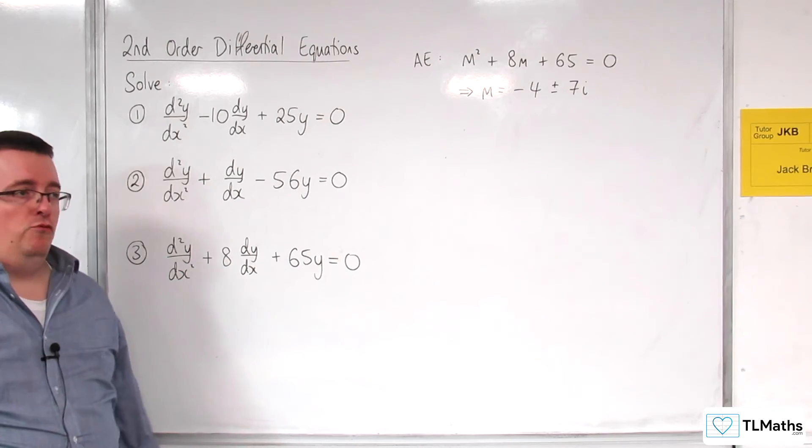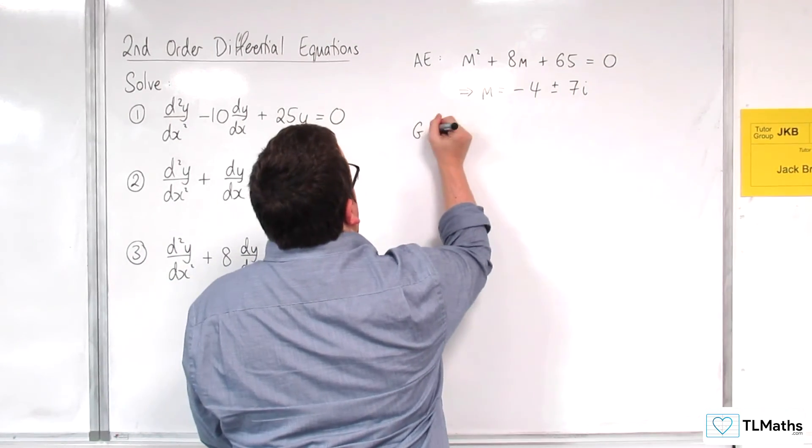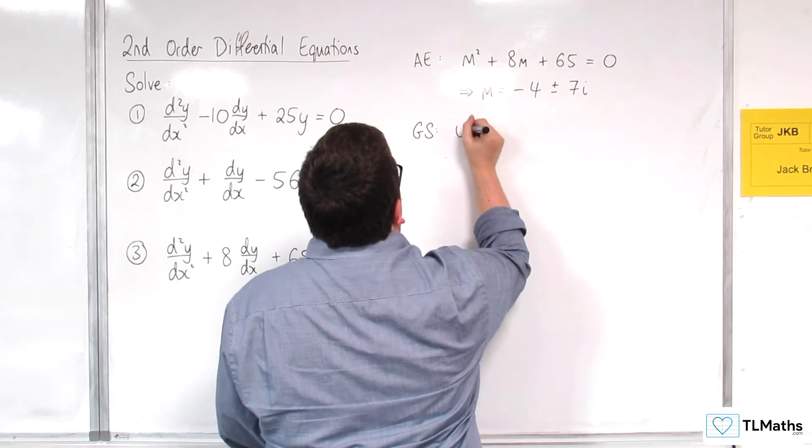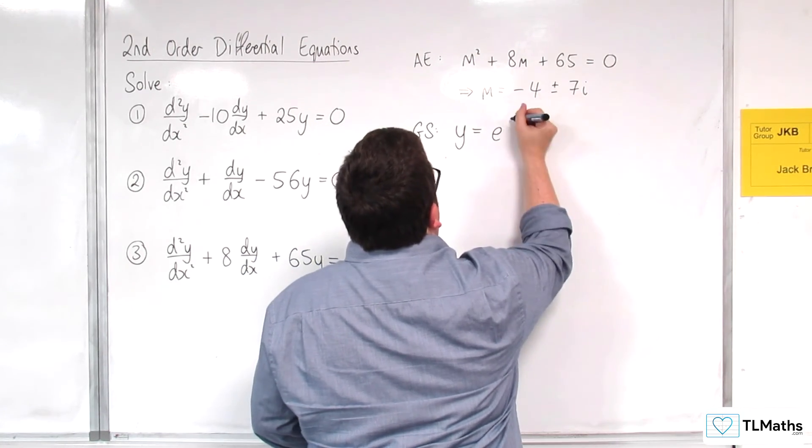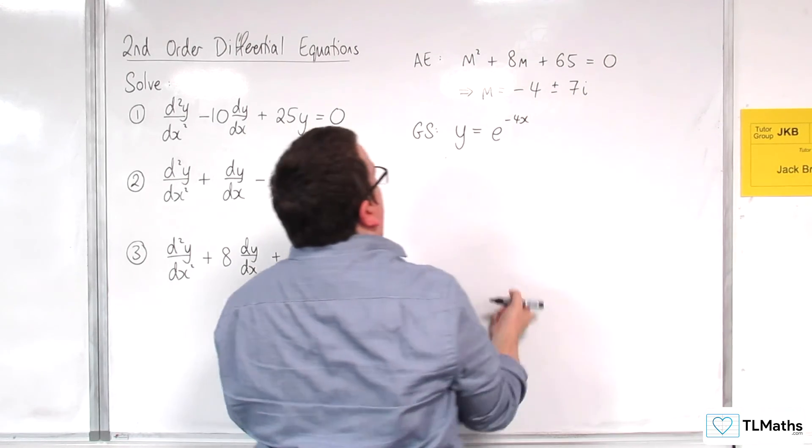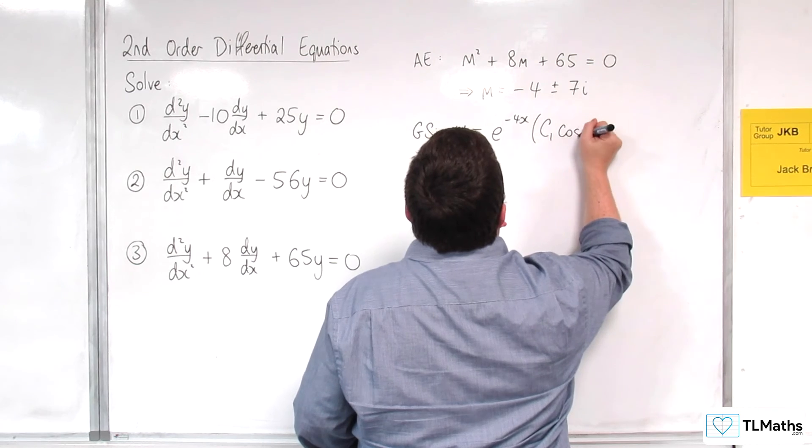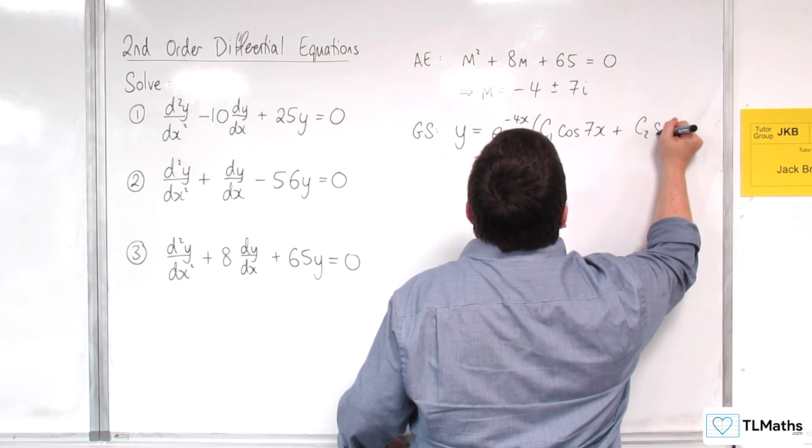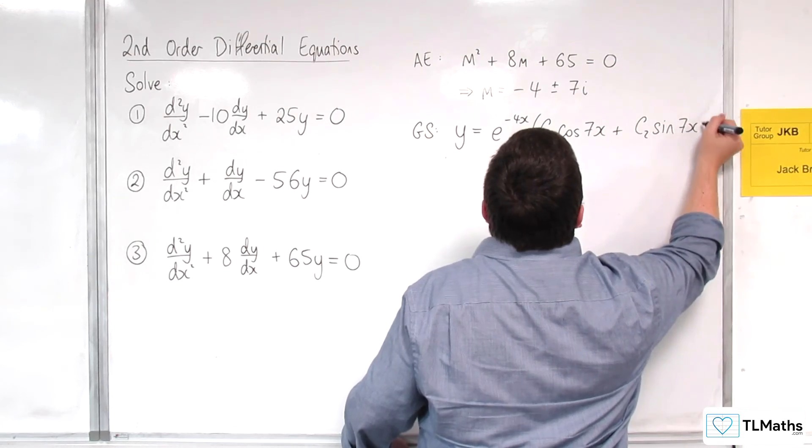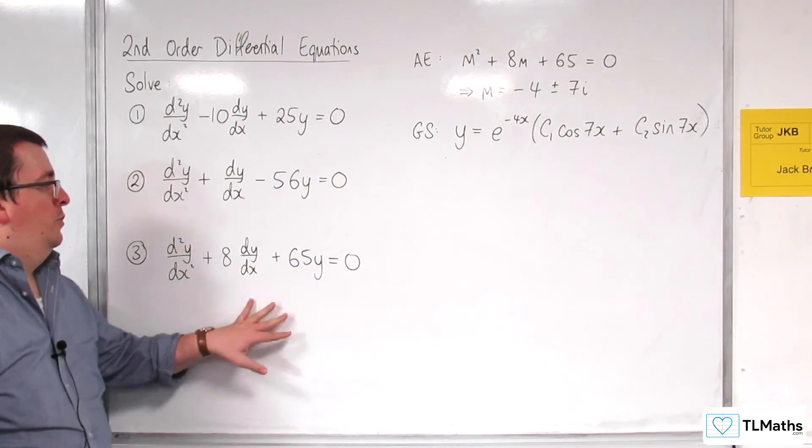So that means the general solution will be y = e^(-4x) times (c₁cos(7x) + c₂sin(7x)). And so that is the general solution for number 3.